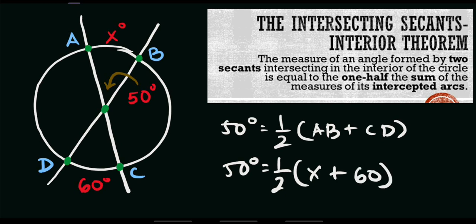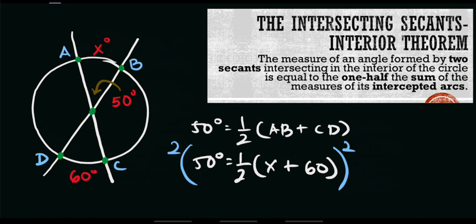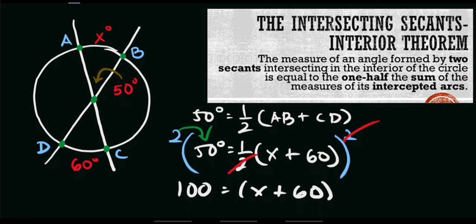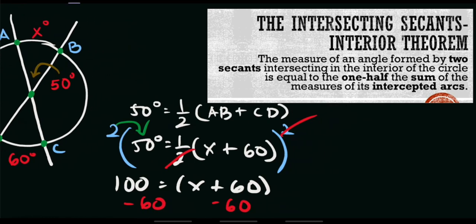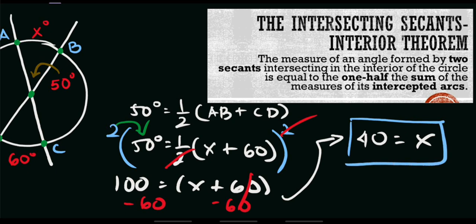To solve for x, we need to do some algebraic manipulation. Multiply the entire equation by 2 to eliminate the denominator, giving us 2 times 50 equals 100 degrees, which equals x plus 60. Applying the Addition Property of Equality, subtract 60 from both sides: 100 minus 60 equals 40. Therefore, x equals 40 degrees, and that is our final answer.